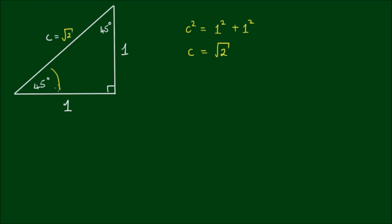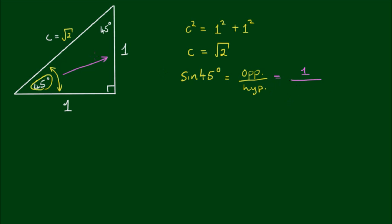Now let's focus on the lower left-hand angle. Now that we have the values of all the sides, we can say that the sine of 45 degrees — the sine of the angle that we are interested in — is given by the length of the opposite side divided by the hypotenuse. So the side that is opposite to the angle has a length of 1, divided by the hypotenuse, which has a length of square root 2. So we can say that the sine of 45 degrees is equal to 1 divided by the square root of 2.